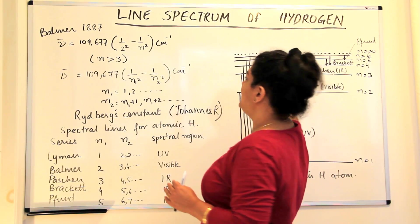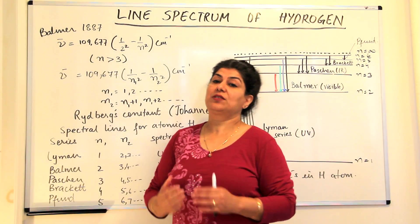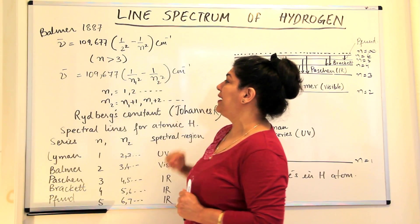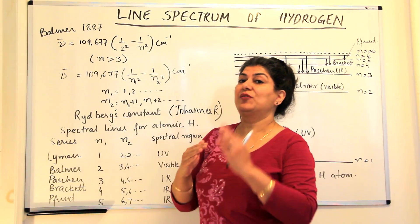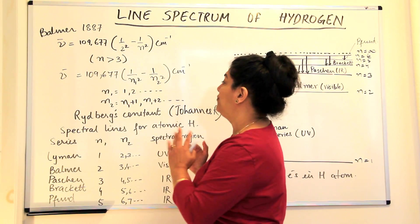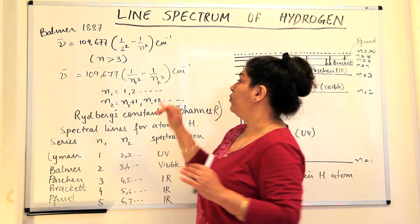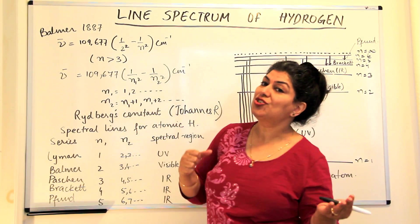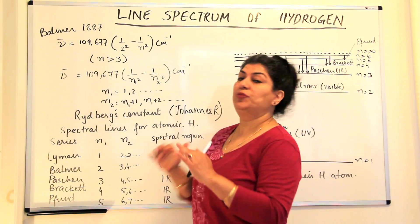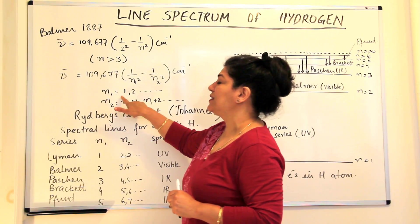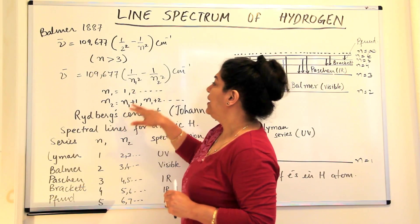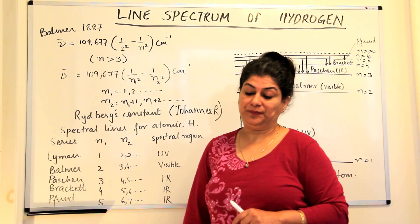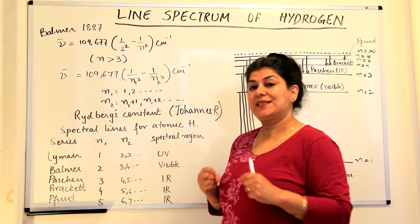He said that all of these lines could be explained by the same formula where n₁ had values of 1, 2, 3, 4, and n₂ were any values like n₁+1, n₁+2, n₁+3. So n₂ could be a series if n₁ was fixed. Whatever was the value of n₁, n₂ could be anything greater than n₁ and this would still be applicable.